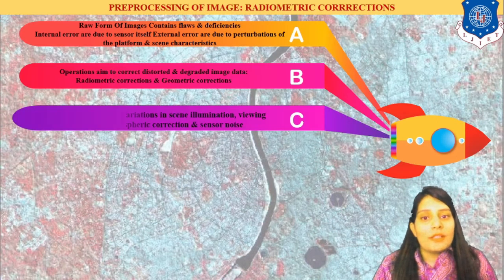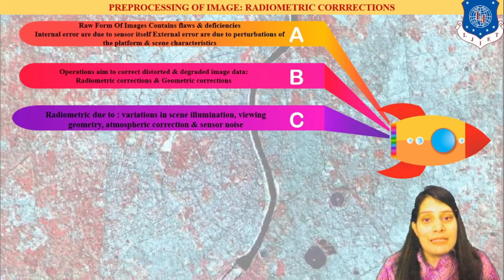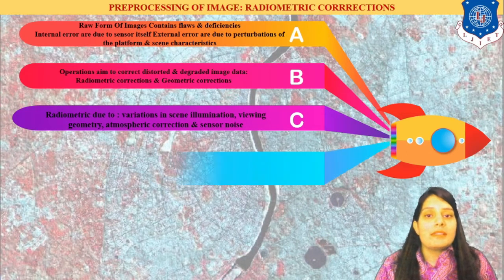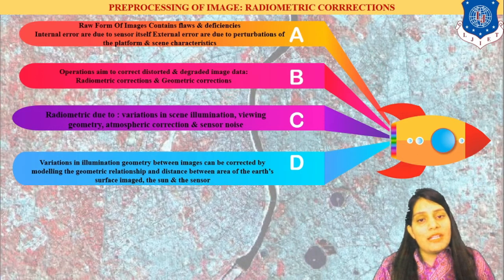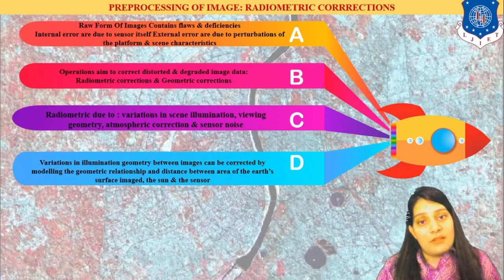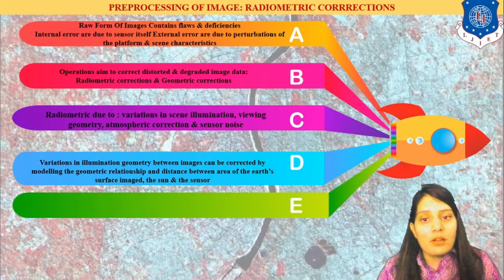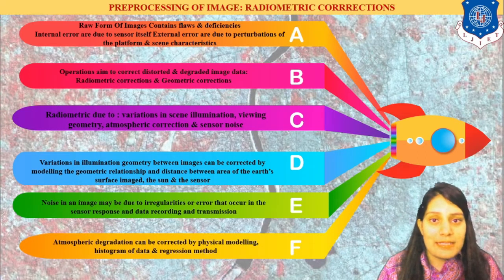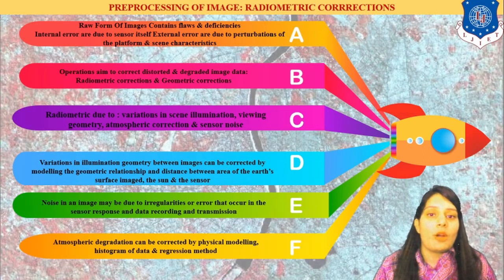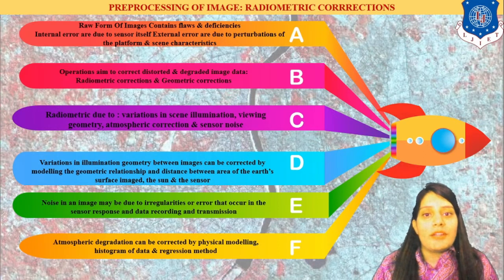Radiometric error occurs due to variation in scene illumination, the viewing pattern of the sensor, and the angle between the sun and the imaged surface. We need to recognize what error occurs when the sensor is imaging the surface of the earth. There is also noise in the image due to data recording and transmission. Physical modeling and atmospheric errors must also be removed — this is what is known as radiometric corrections.